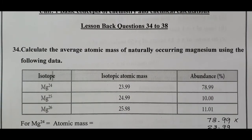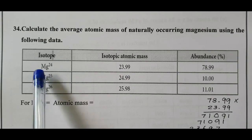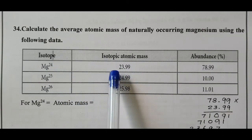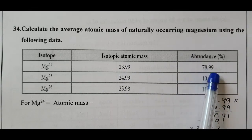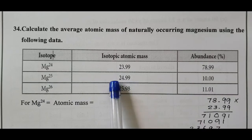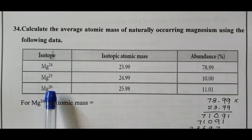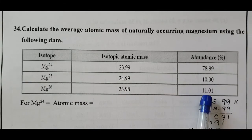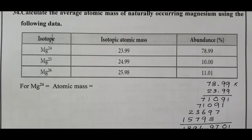The isotopes of magnesium are given: Magnesium-24 with isotopic atomic mass 23.99 and abundance 78.99%; Magnesium-25 with atomic mass 24.99 and abundance 10%; Magnesium-26 with atomic mass 25.98 and abundance 11.01%. First we have to calculate the individual atomic mass of all these isotopes.